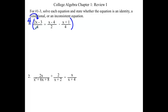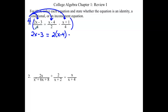When we distribute that to the first piece, the 4s will drop out and we just have 2x minus 3. When we multiply that 4 to this one, we can reduce the 4 with the 2 in the denominator — we'd still have a 2 left over and the x minus 4 piece. And when we multiply it to the last part, the 4s again drop out and we have the x plus 1. Notice that we are subtracting that whole quantity x plus 1.